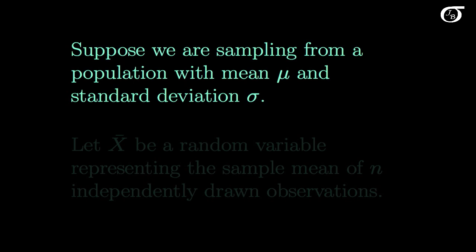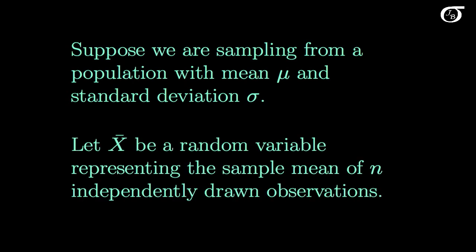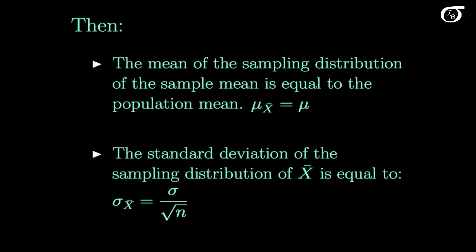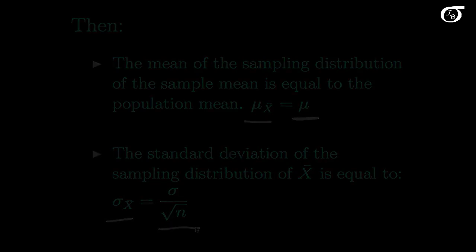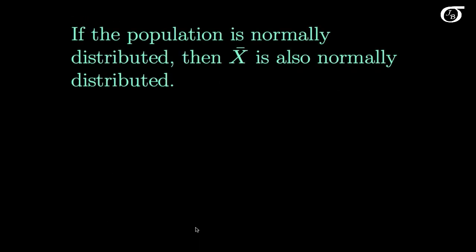Suppose we are sampling from a population with mean mu and standard deviation sigma, and we let X-bar be a random variable representing the sample mean of n independently drawn observations from this distribution. We've previously learned that the mean of the sampling distribution of the sample mean, mu X-bar, is equal to the mean of the population. We also learned that the standard deviation of the sampling distribution of X-bar, sigma X-bar, is equal to sigma over the square root of n. And if the population is normally distributed, then the sampling distribution of X-bar is also normal.